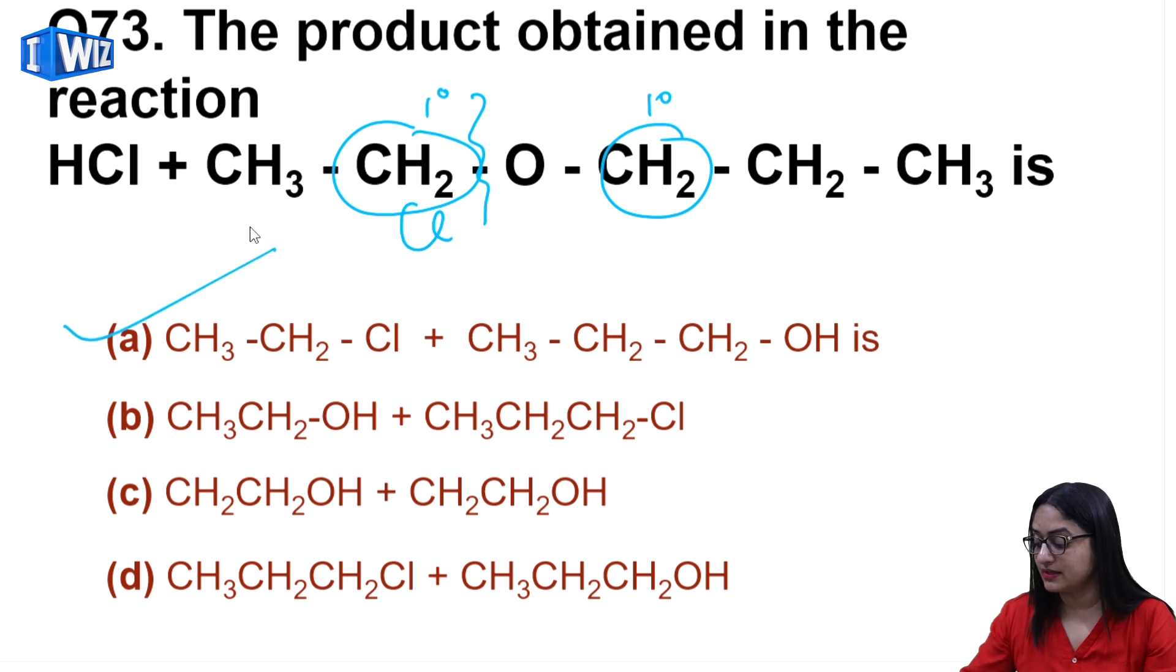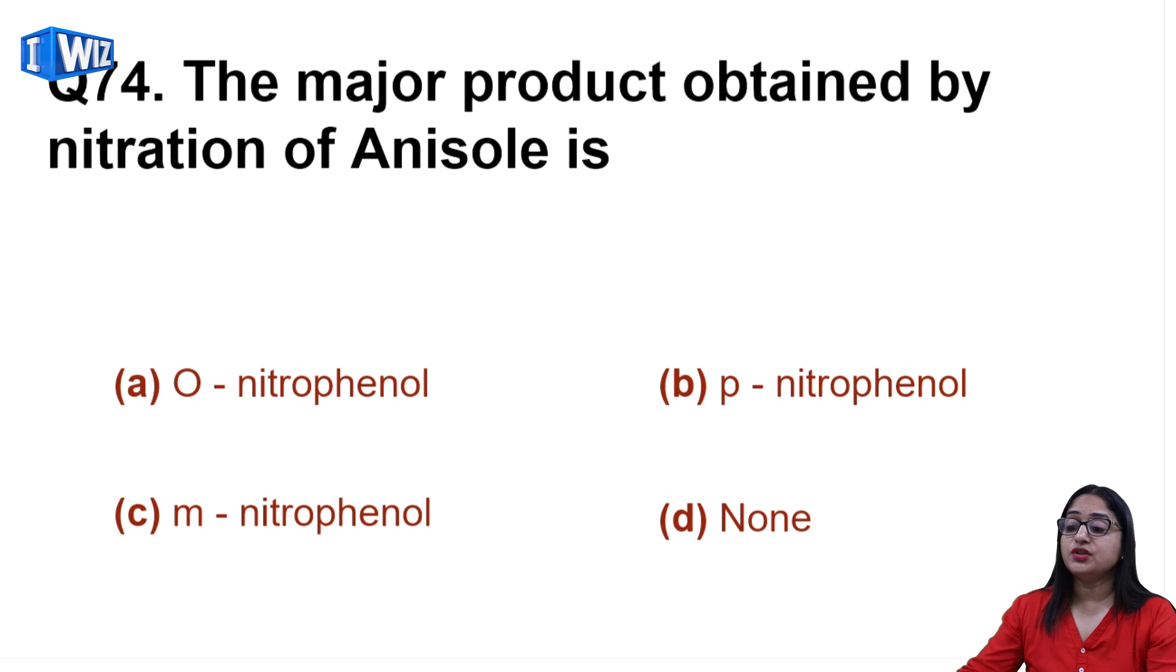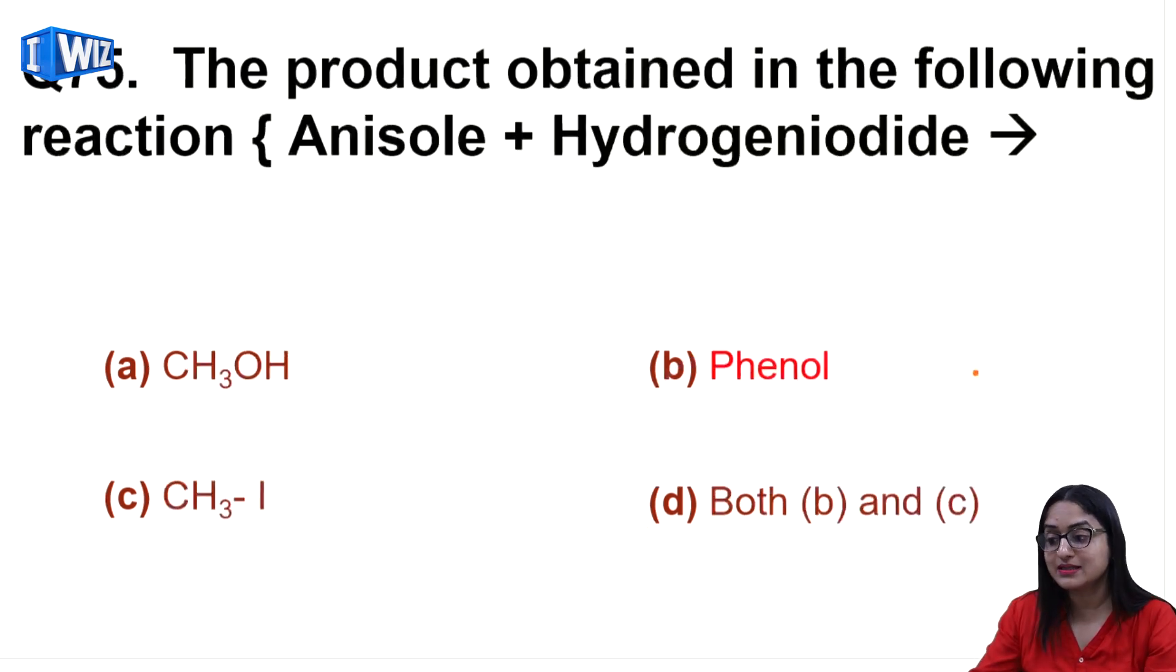The major product obtained by nitration of anisole: from nitration of anisole, both ortho and para substituted products form. But since major is asked, para-nitrophenol will be the answer.